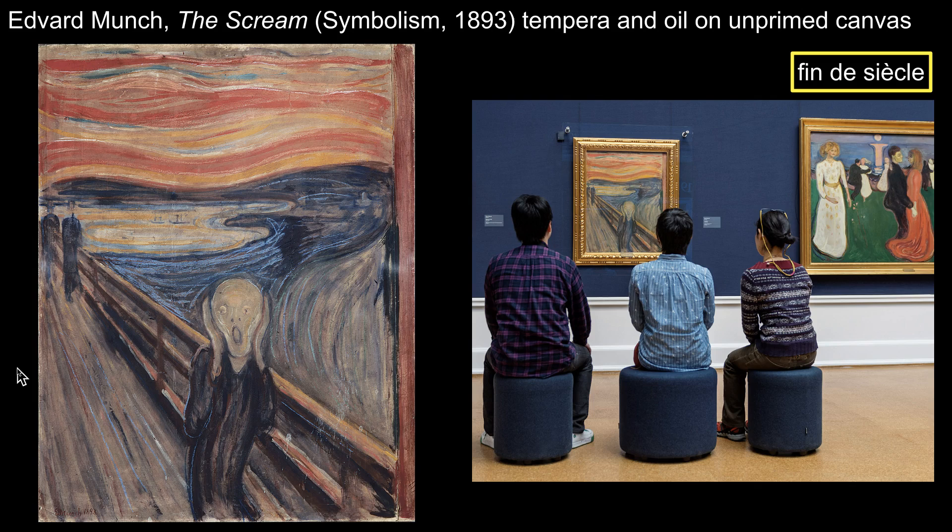Munch wrote about this work saying: 'Above the blue-black fjord hung the clouds, red as blood and tongues of fire. My friends had left me, and alone, trembling with anguish, I became aware of the vast infinite cry of nature.' This work still depicts subject matter from the natural world — man on bridge — but does so to express emotion, a state of mind: loneliness and despair.